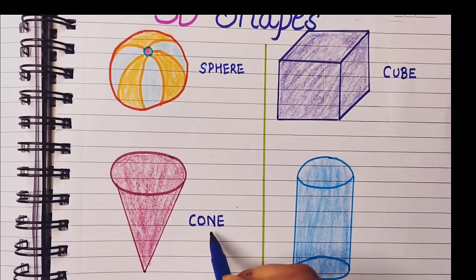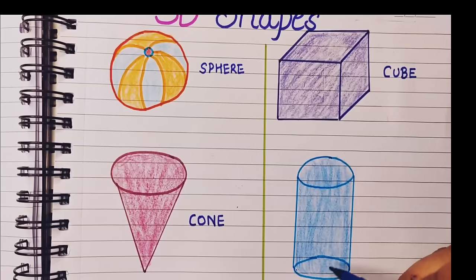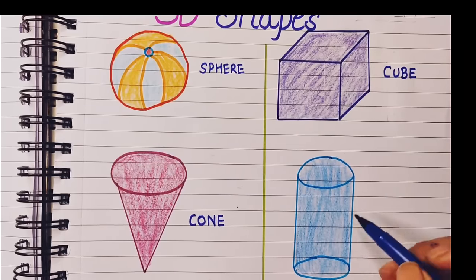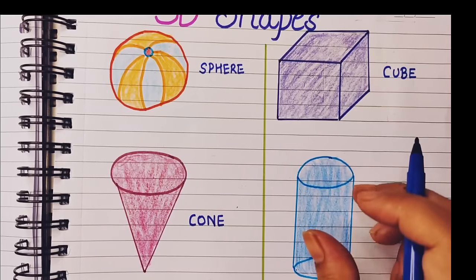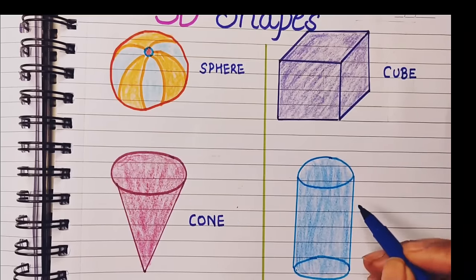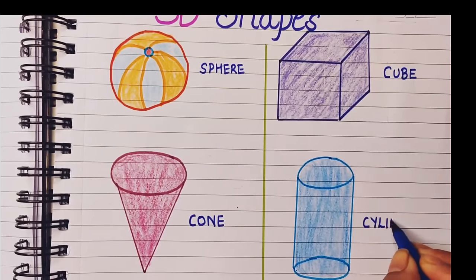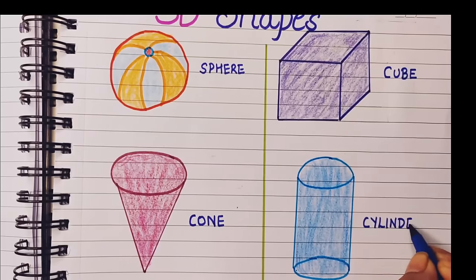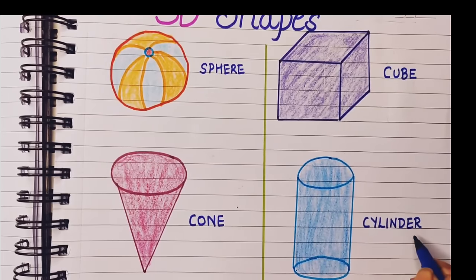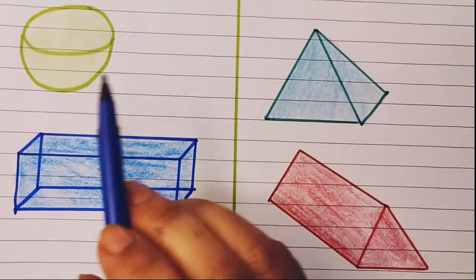The next shape is cylinder shape because this looks like an elongated cylinder. This is a cylinder shape: C-Y-L-I-N-D-E-R, cylinder.